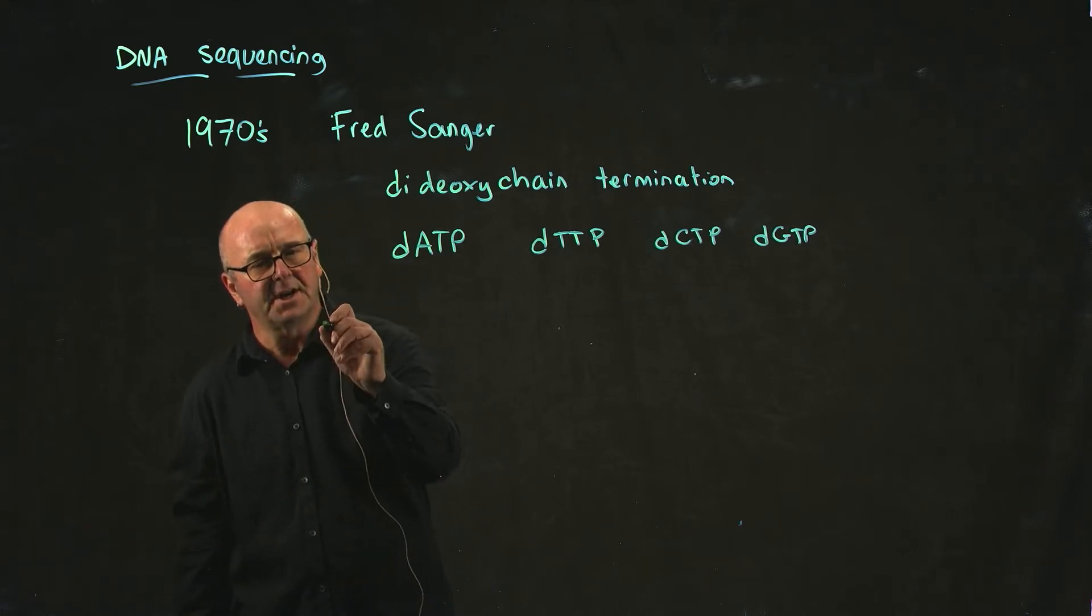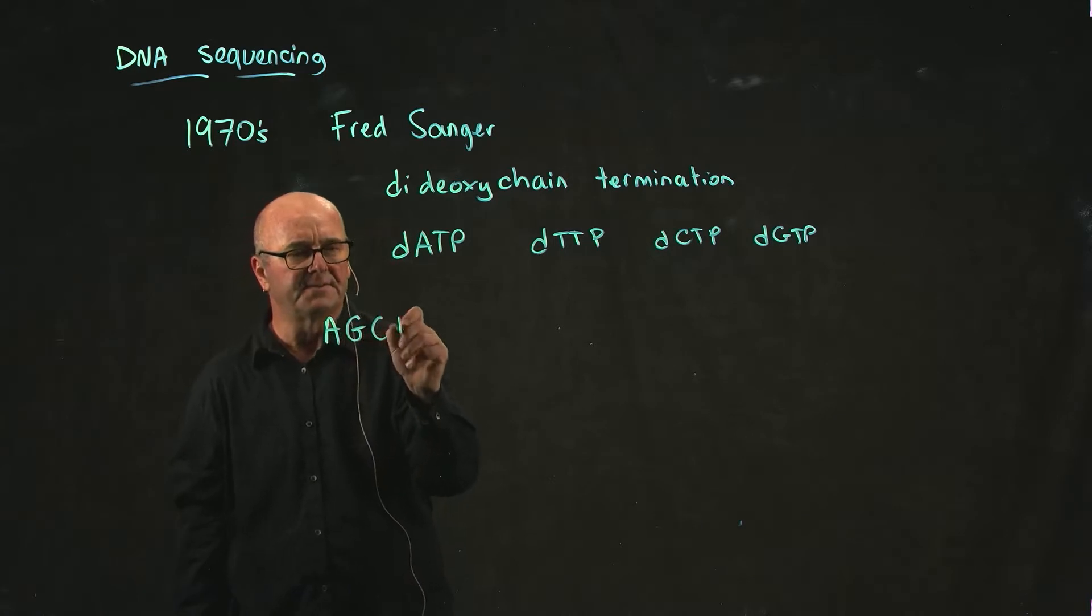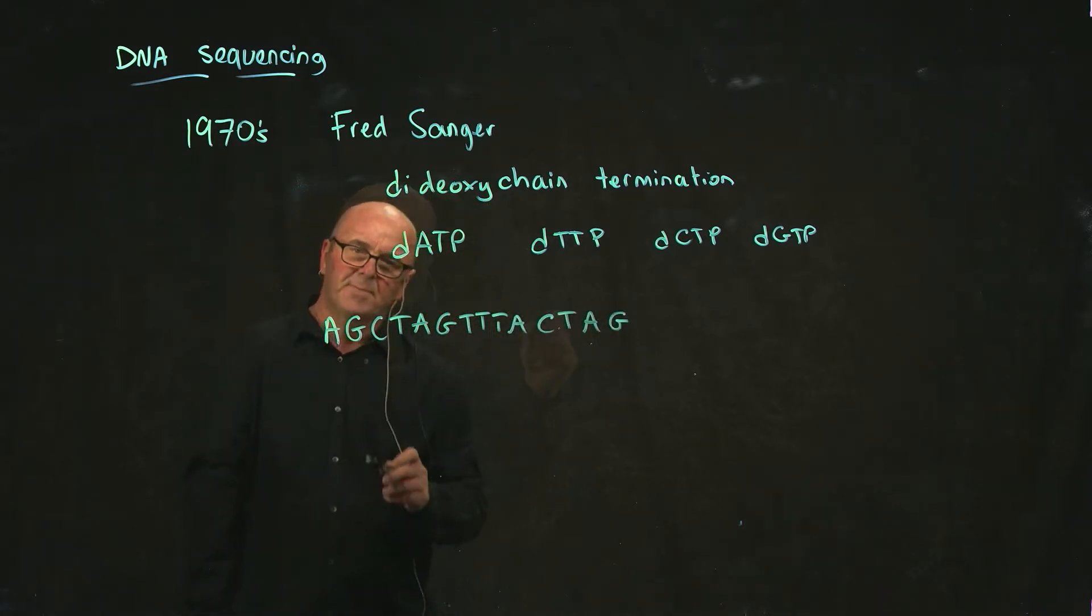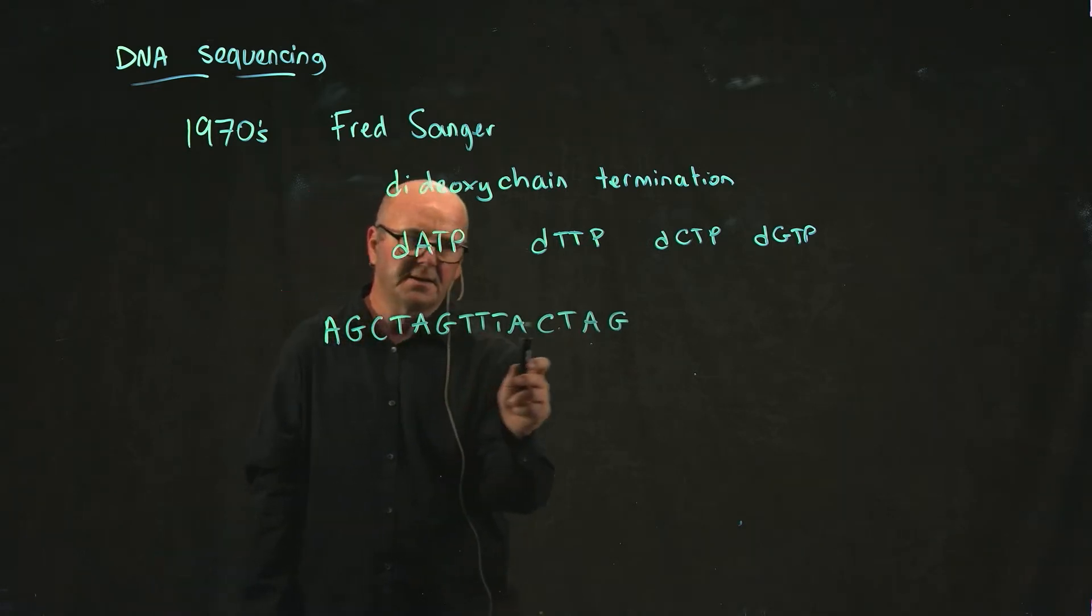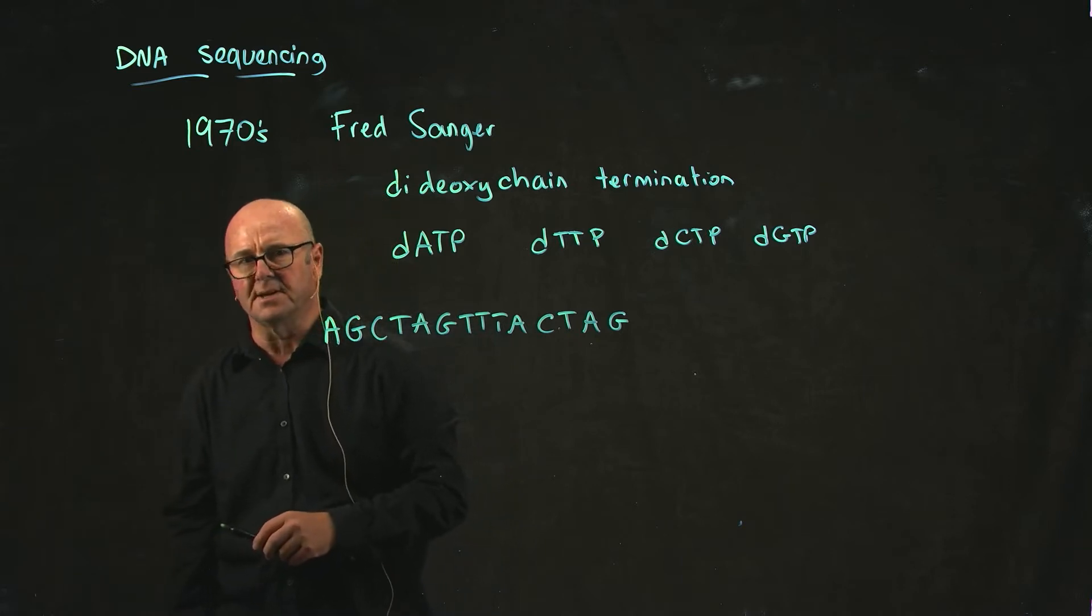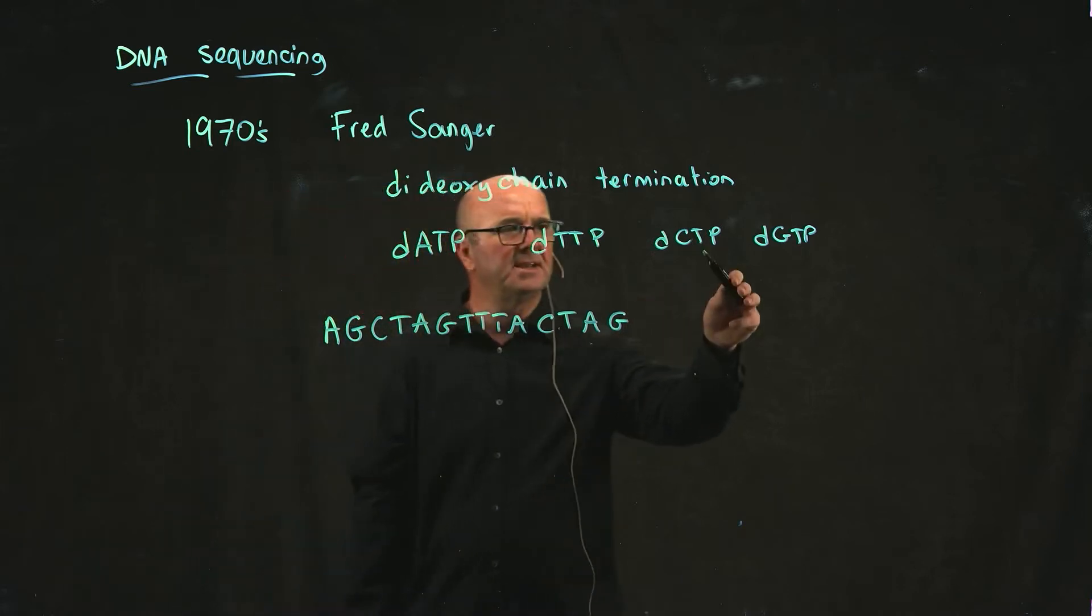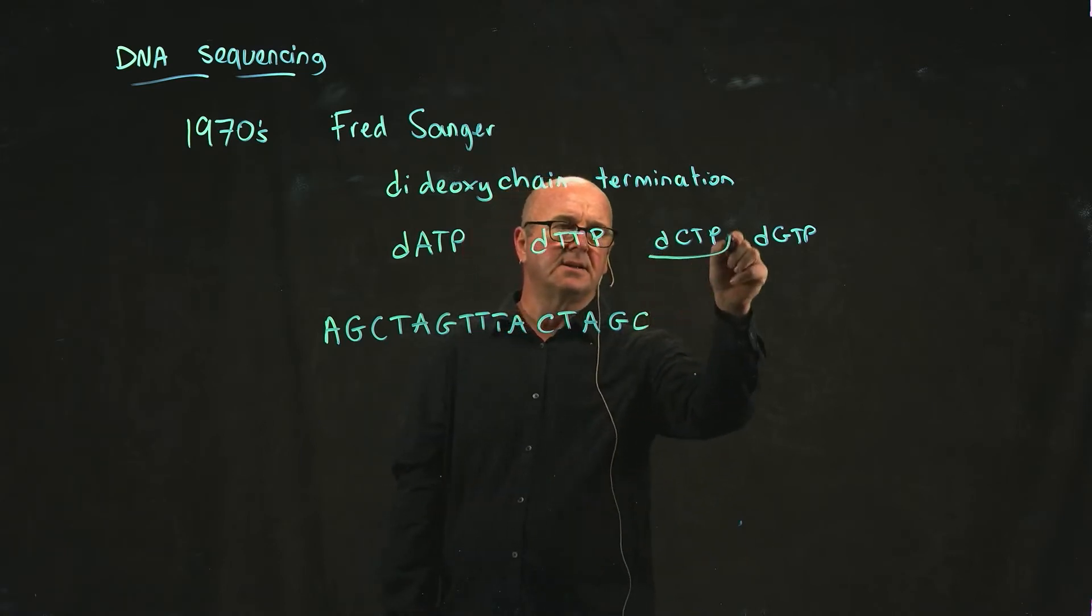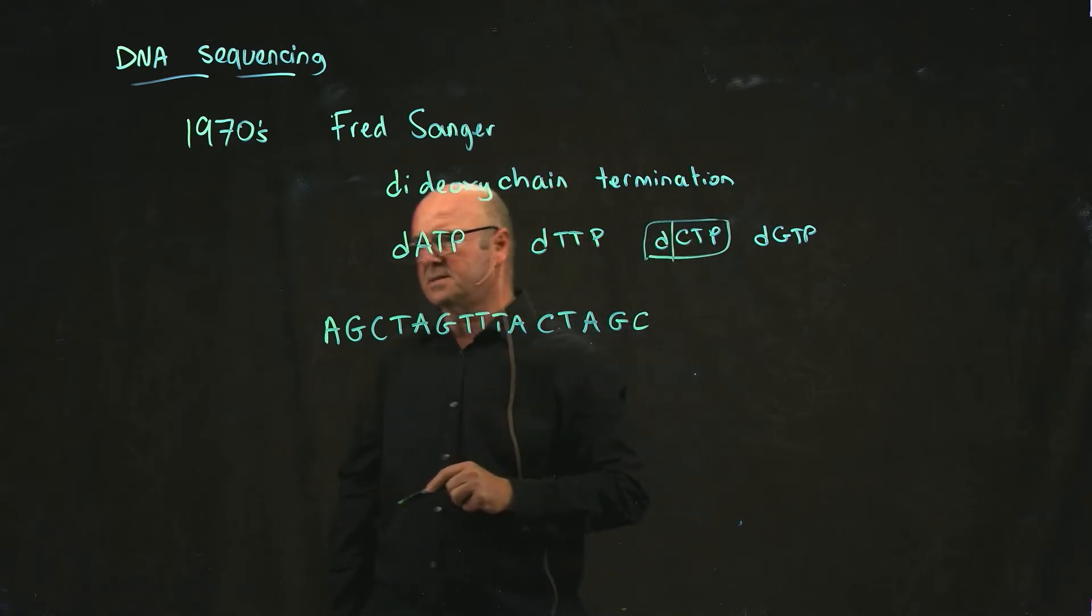To make a chain where you have the different letters like this, the sequences are joined in part by this deoxy group here. So as you add a new base, if we added a dCTP, it would come in here as a C using this deoxy part of it.